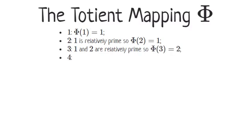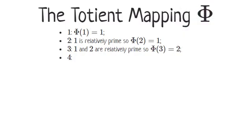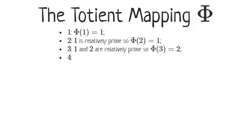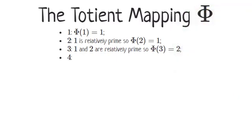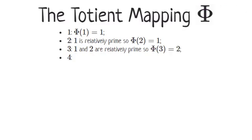Ron, what numbers less than four are relatively prime to it? Obviously one, two, and three. Well Ron, what's the greatest common divisor of two and four? Um, two. So two is not relatively prime to four. Okay, just one and three then. Good. So Phi of four equals two.